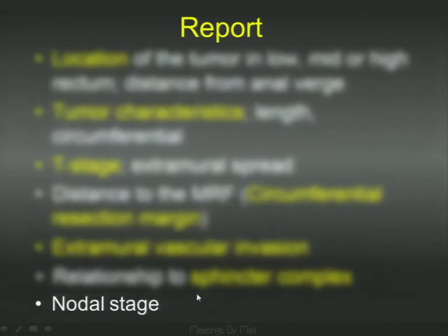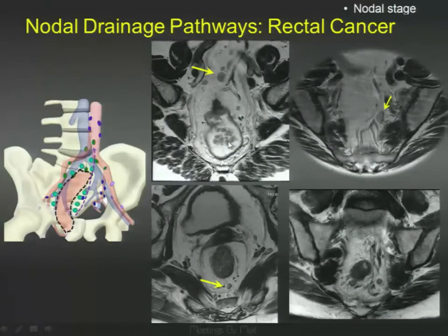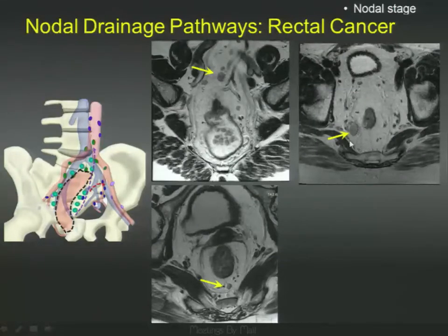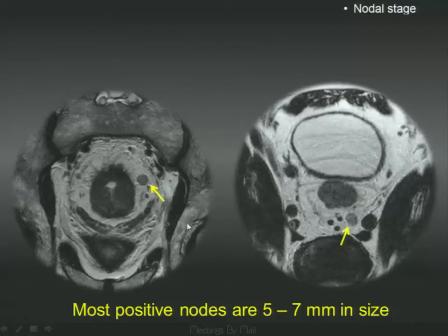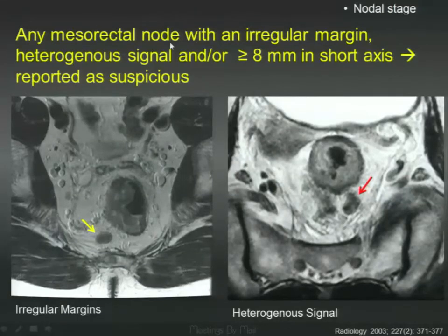Finally, moving on to nodal stage: the common lymph nodes involved in rectal cancer are the nodes accompanying the inferior mesenteric vessels. You can also get internal iliac lymph nodes occasionally. Most nodes are between 5 and 7 millimeters in size. You can use morphology — irregular margins or heterogeneous signal usually indicates metastatic nodes. Call a mesorectal node positive if it has irregular margins, heterogeneous signal, and is greater than or equal to 8 millimeters.